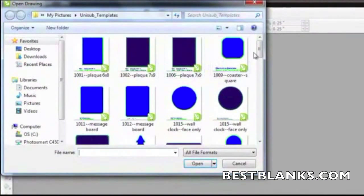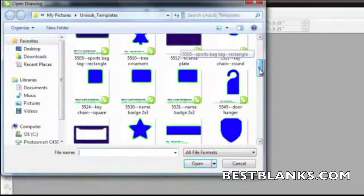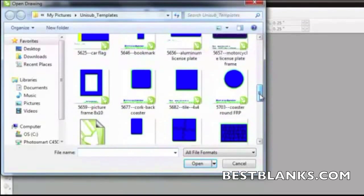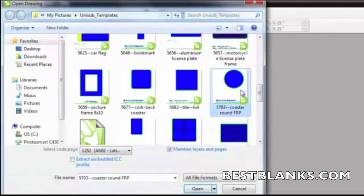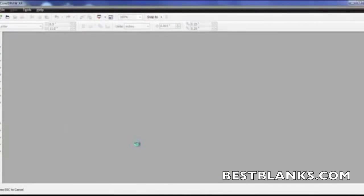Now locate the template that was just downloaded. We were using the 5703 Coaster. Click on it to select, then click open.